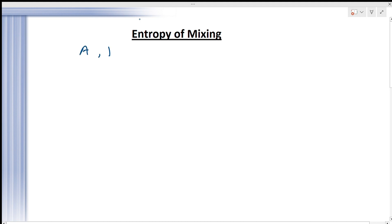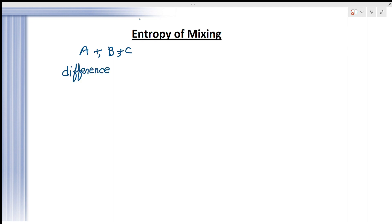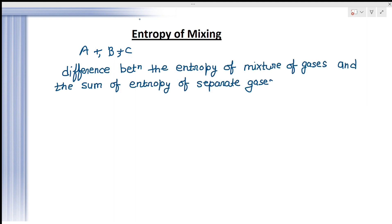Suppose you have some gases A, B, C — these are different gases — and these all will have some kind of entropy. If we mix them all, mixing A with B, B with C, all are mixed in a cylinder, then the entropy will change. The entropy of mixing is the difference between the entropy of the mixture of gases and the sum of the entropy of the separate gases, each at the same pressure P.